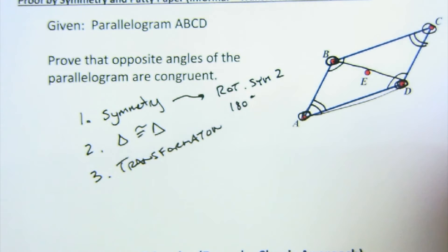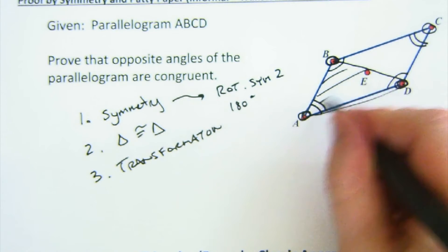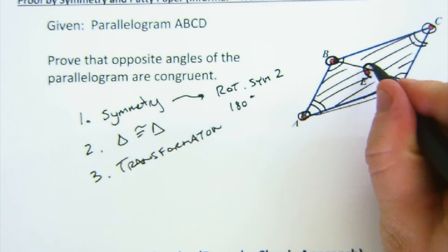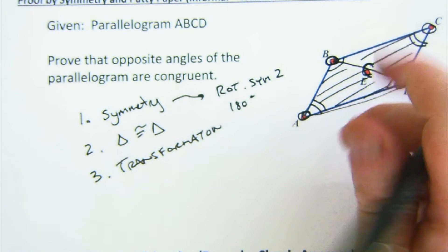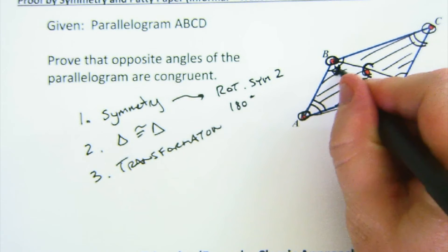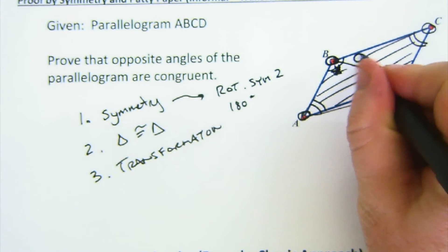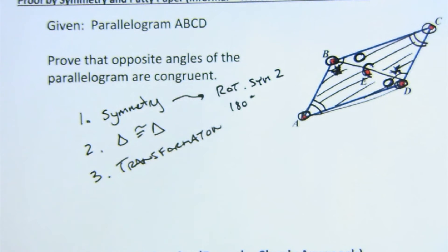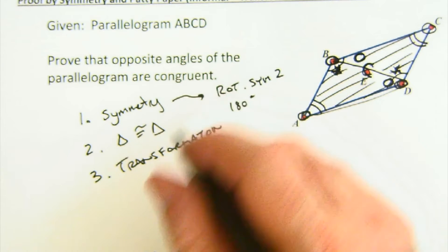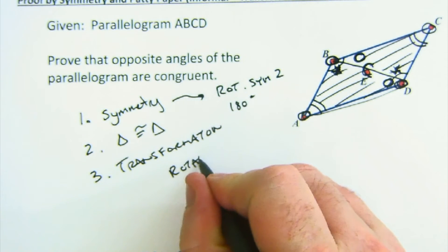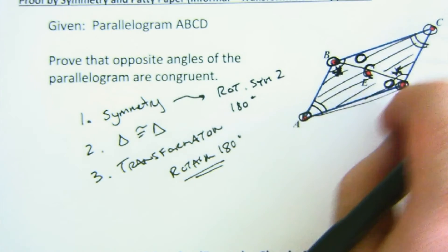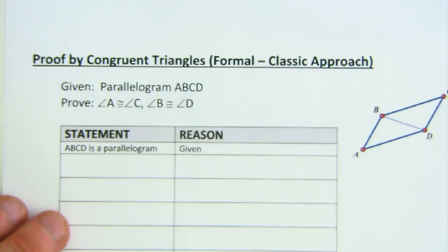If you wanted to, you could also create this diagonal and start talking about these being congruent triangles. This isn't that difficult either. There would be a common side, and using the parallel lines, you could talk about an alternate interior here and here, and an alternate interior here and here, and establish a nice little congruence. You could also talk about just doing a rotation of 180 degrees and looking at who maps to who, and so on.